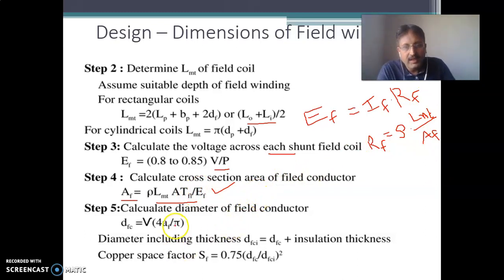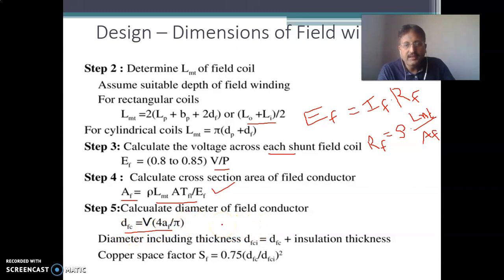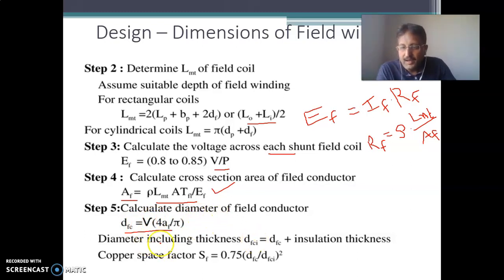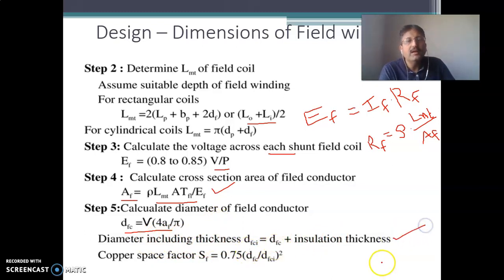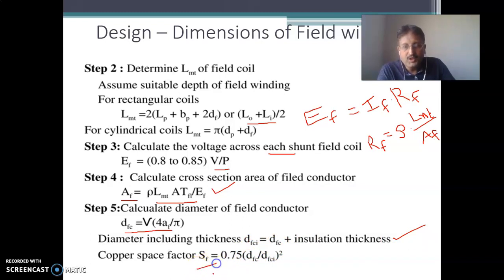Once you get the area AF, assuming the conductor is circular — area = (π/4)d² — you can find the diameter as the square root of (4A / π). You also need to consider the thickness of insulation, so this diameter includes the insulation thickness. Also consider the space factor, which is 0.75.